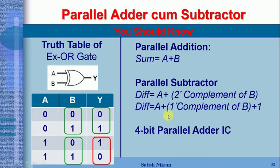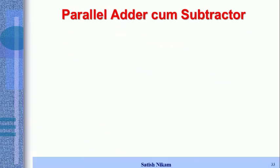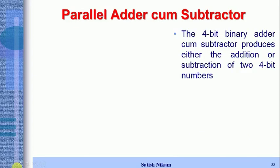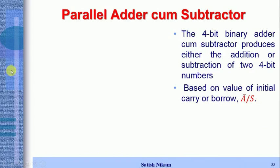We have IC 74LS283 for the designing of a parallel adder, as discussed in the last session. Now we are designing a four-bit binary adder-subtractor circuit that produces either addition or subtraction depending on the input applied. The selection bit is /S: when /S is zero, the circuit acts as an adder; when /S is one, it acts as a subtractor.